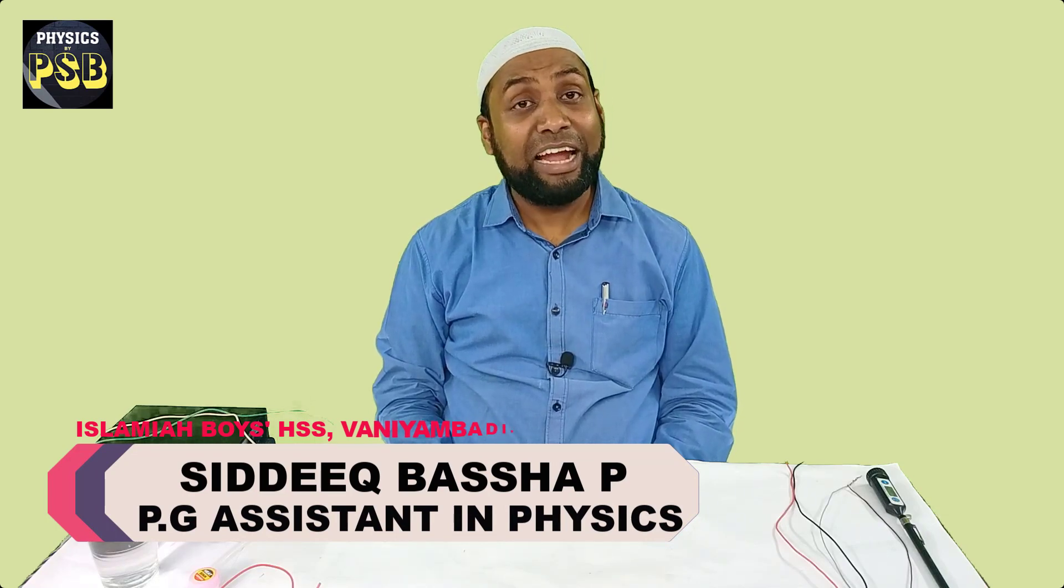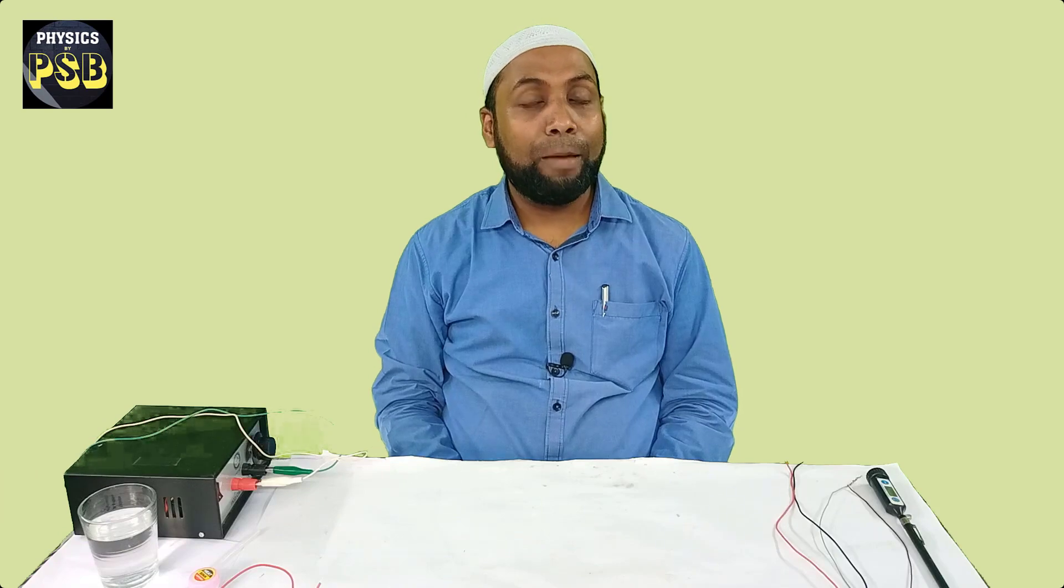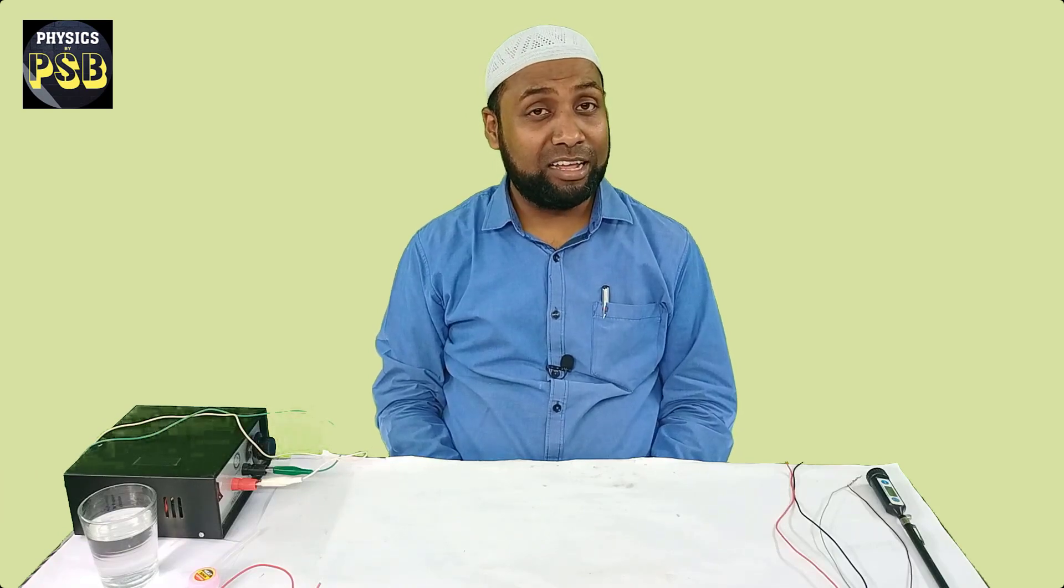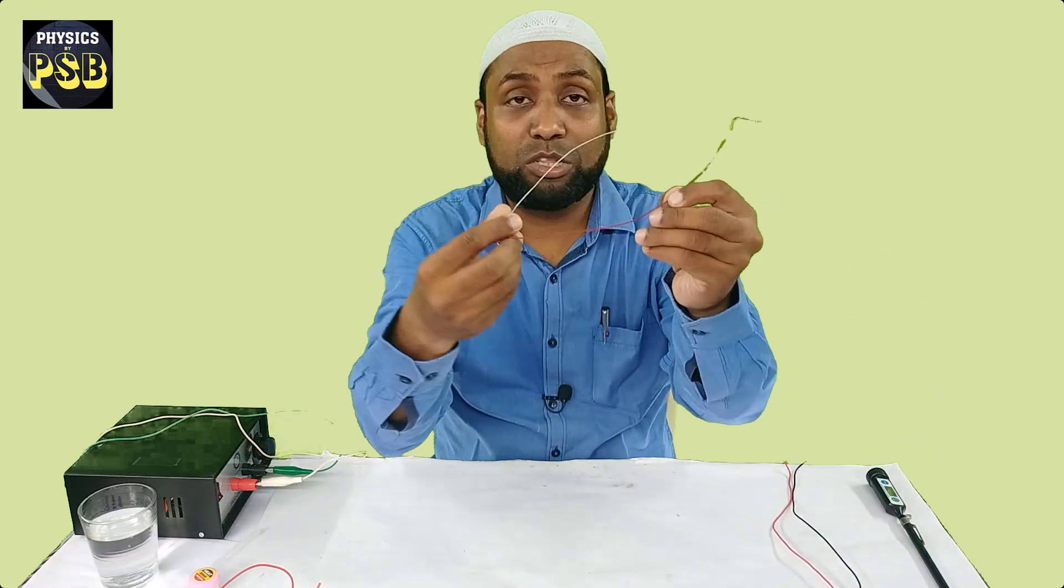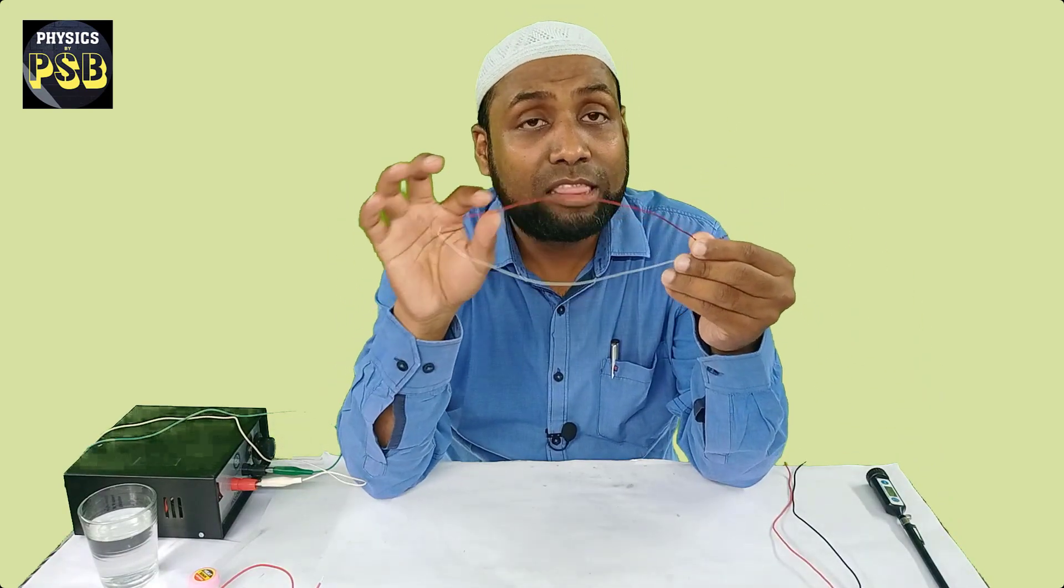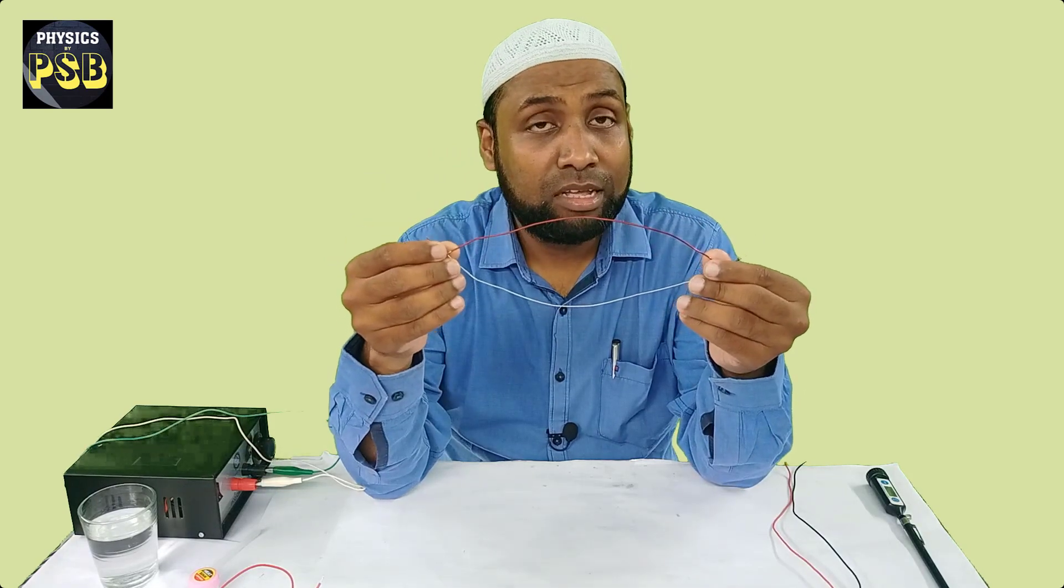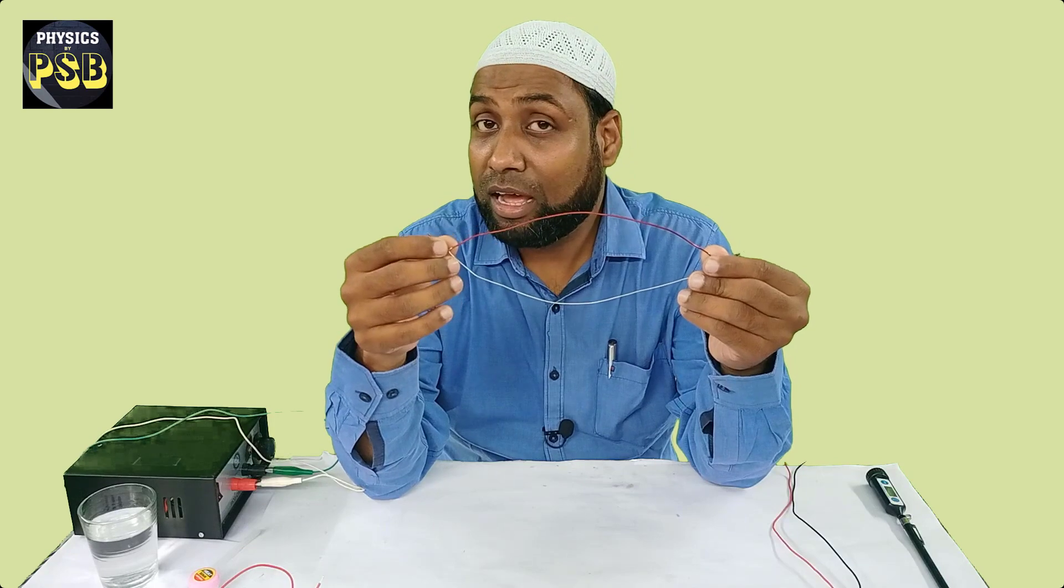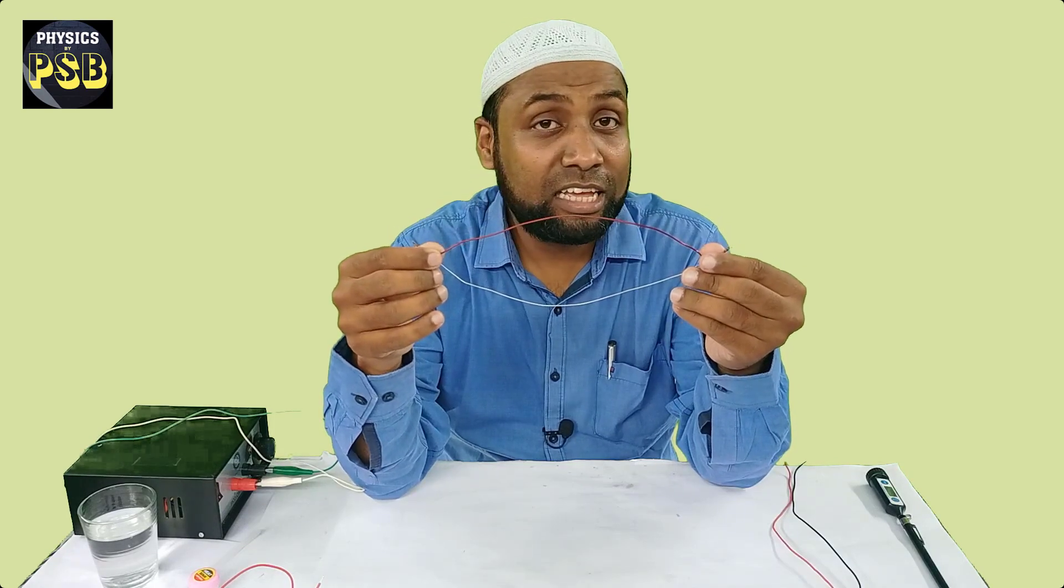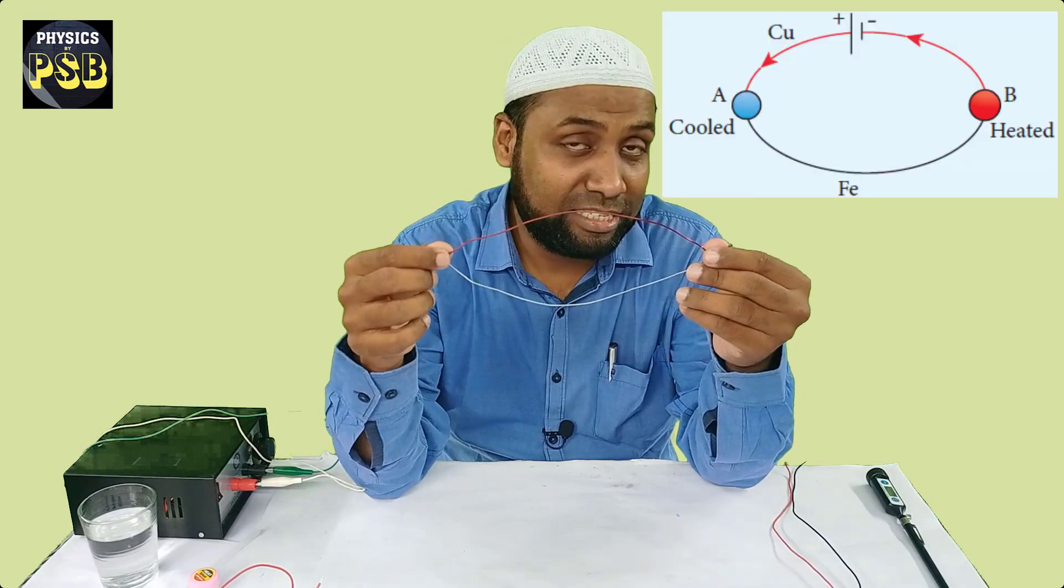In the year 1834, Peltier discovered that when electric current is passed through a thermocouple, then heat is evolved at one junction and heat is absorbed at the another junction.